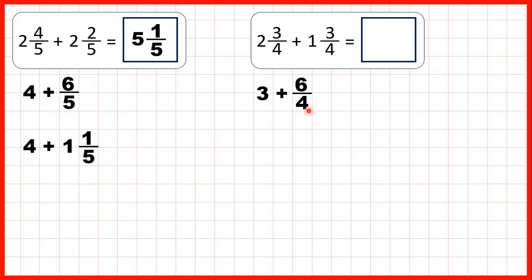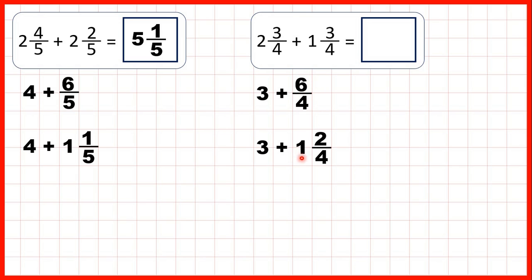But again, we can't write 3 and 6 quarters as our answer, because we can't have an improper fraction in a mixed number. We need to change 6 quarters back into a mixed number. 6 divided by 4 is 1 remainder 2, so 6 quarters is 1 and 2 quarters, and that makes sense because 1 times 4 is 4 plus 2 is 6, and that's the numerator of the improper fraction we had. So adding that to our 3 wholes, 3 plus 1 is 4, and the 2 quarters stays the same, so our answer is 4 and 2 quarters.